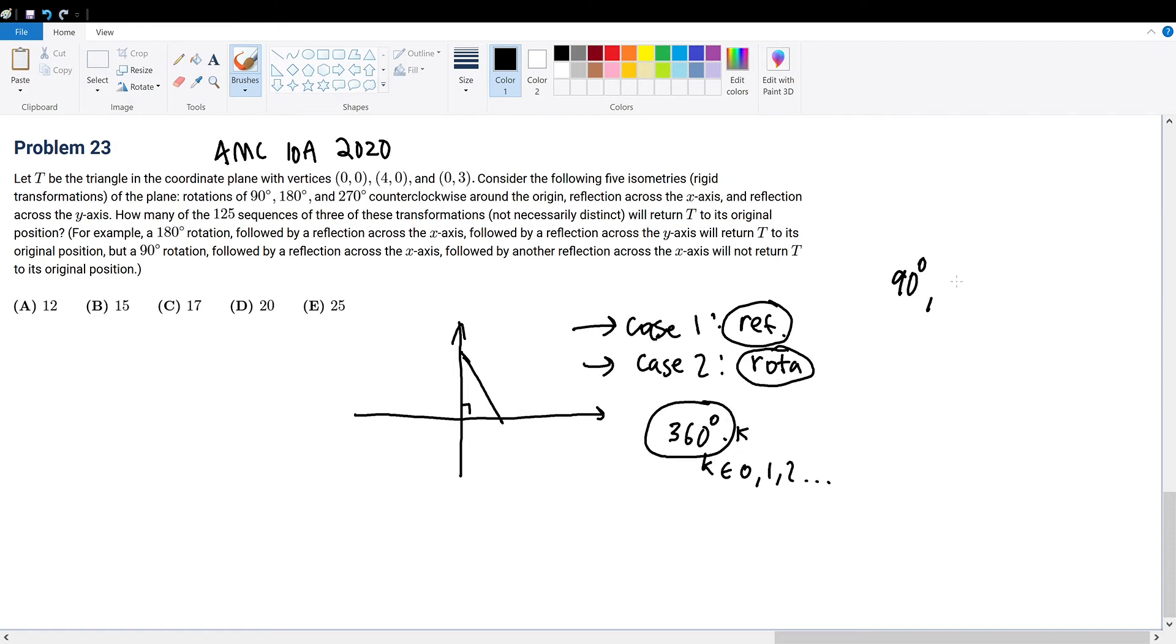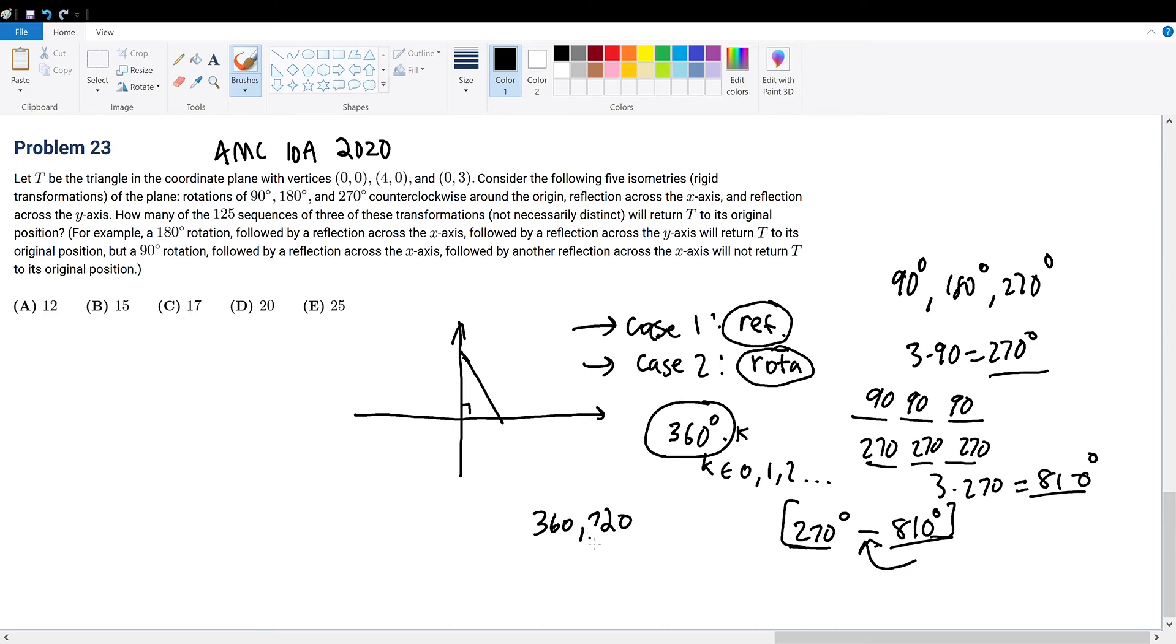How many 360 degree multiples can we achieve from 90, 180, and 270 degree rotations? The smallest degree rotation would be 3 times 90, which is 270 degrees. For the largest, it's 3 times 270, which is 810 degrees. So how many multiples of 360 degrees match between this inclusive interval from 270 to 810? Obviously, it will be 360 and 720.